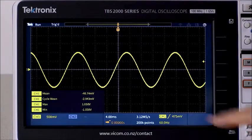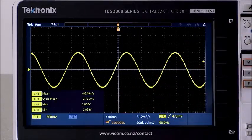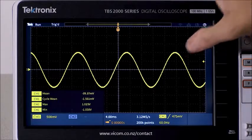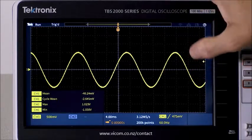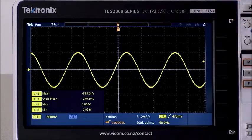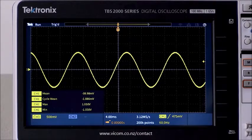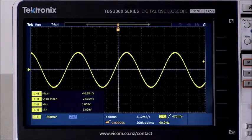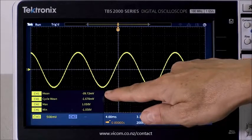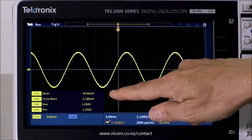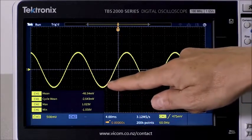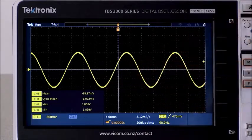The min and max are about equal but opposite, and this sine wave is vertically symmetrical around zero volts. In other words, there's no DC offset. The cycle mean is pretty close to zero volts, but the mean is negative. Why is that?